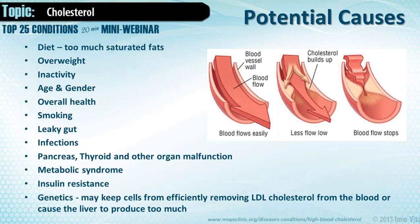Hypothalmitis — an inflammation of the hypothalamus — messes up the entire endocrine system and pushes us into metabolic syndrome. Insulin resistance also contributes: because of the amount of processed foods we eat, our insulin levels are constantly spiking, and our cells become resistant to the transportation and deposition of fats through the cell membrane. Additionally, genetics may keep cells from effectively removing LDL cholesterol from the blood or cause the liver to produce too much.